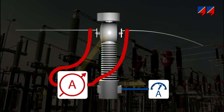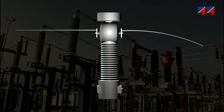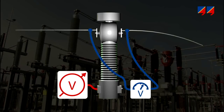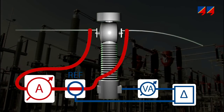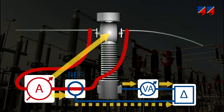The three methods are: primary current injection using a portable high-current source; secondary voltage injection using a portable variac; and primary nominal current injection using a high-current source, a reference CT, a burden simulator, and a bridge.